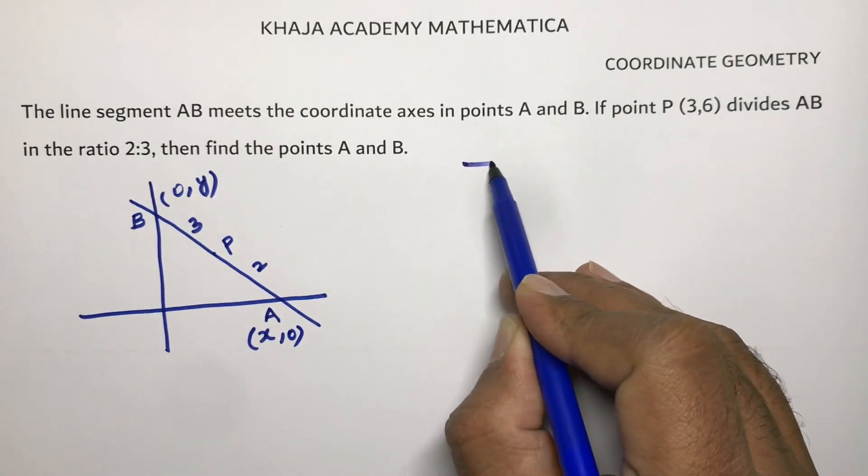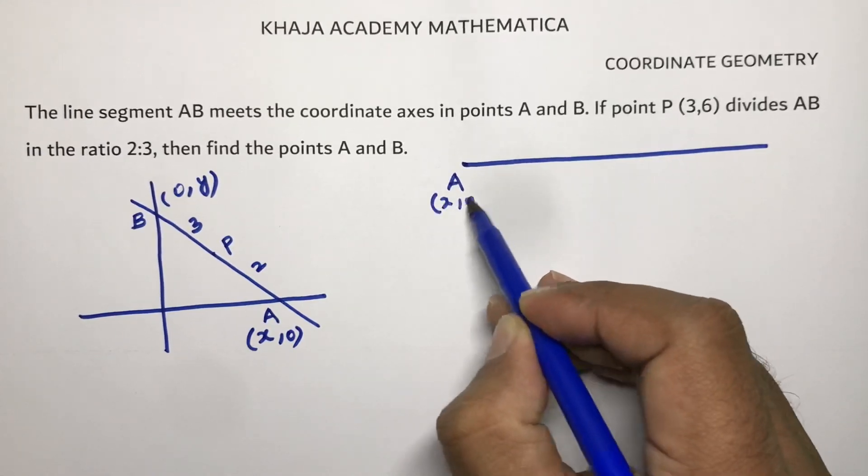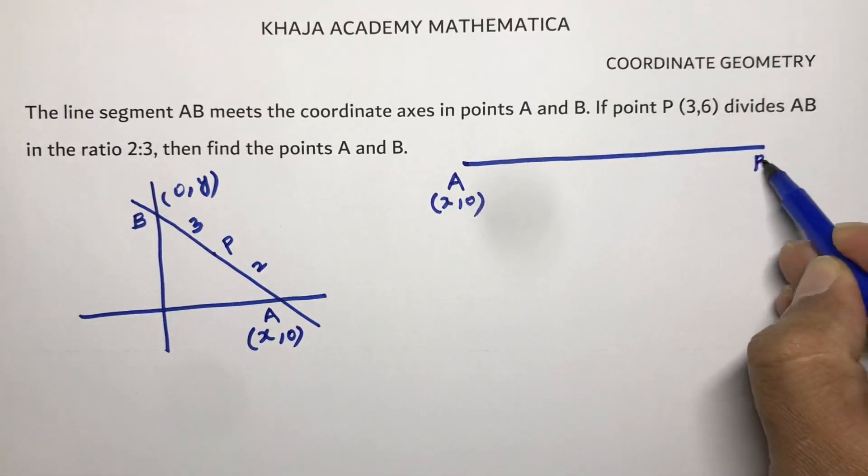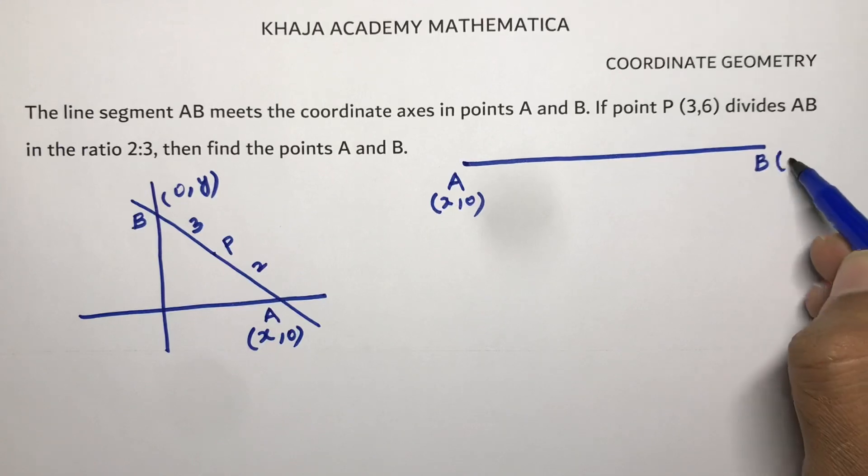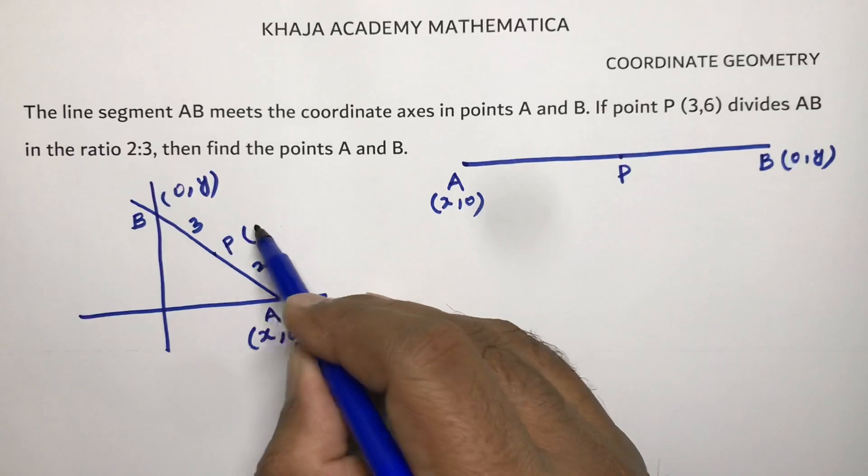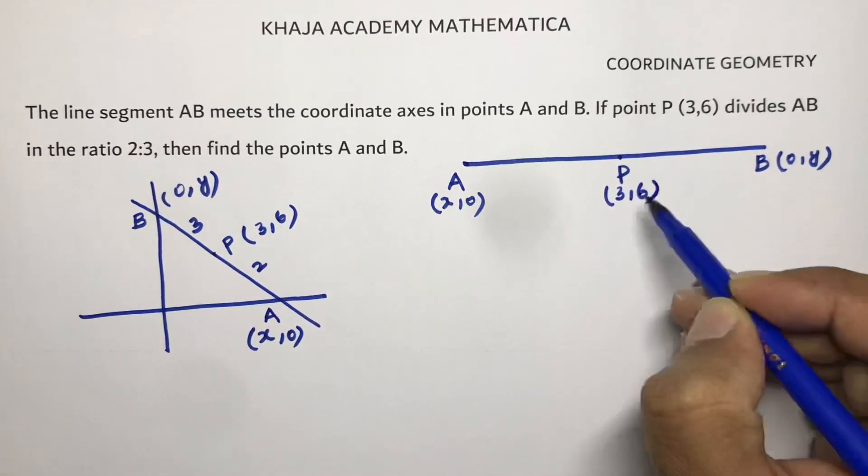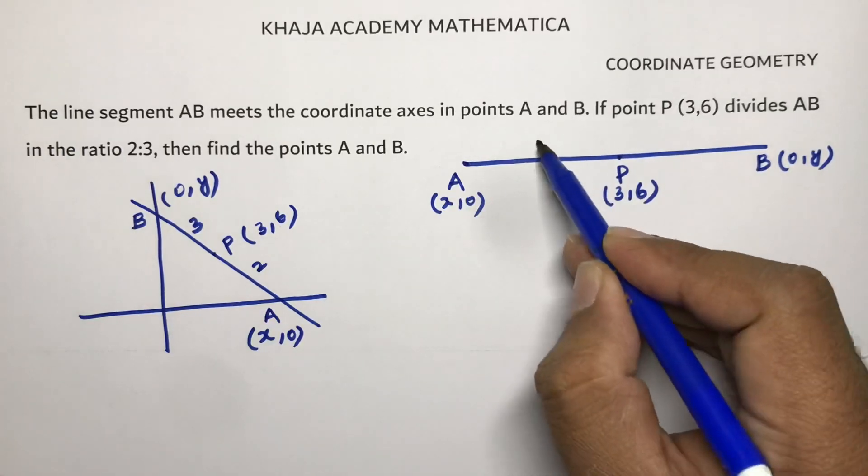Now if we draw the diagram: A is (x, 0) and B is (0, y), and there is a point P which is (3, 6). So this point (3, 6) is dividing AB in the ratio 2:3.